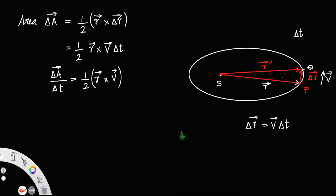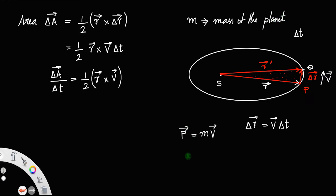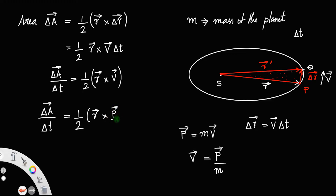Now, we have momentum vector P. If vector P stands for momentum, then momentum equals mass of the planet times its velocity. Let m be the mass of the planet, so vector V equals P divided by m. Plugging in the value of V, delta A by delta T equals 1 over 2m times R cross P.